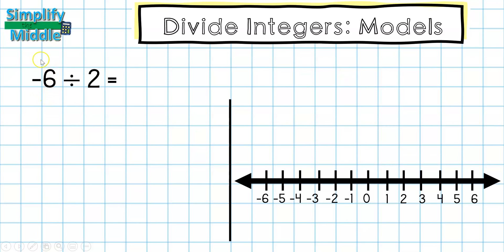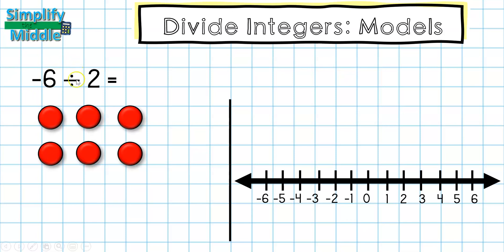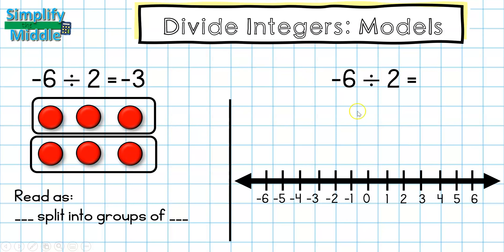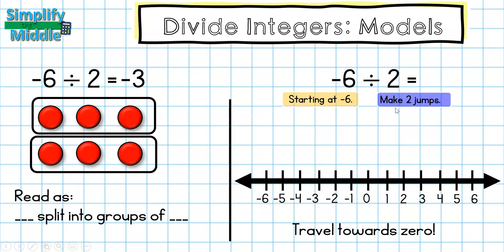In this problem, the dividend is negative, which means I have six red counter chips. Negative six split into groups of two — I create two groups and what's in one group is my answer: three red tiles, so that's negative three. On the number line, I start at negative six and make two jumps: negative six to negative three, then negative three to zero. My answer is negative three.